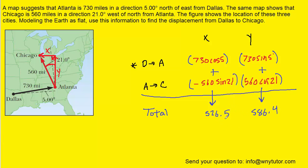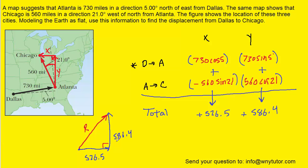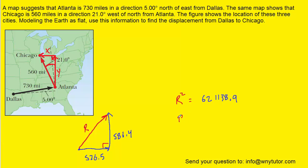Now that we have those two components, we draw a new right triangle. Both components are positive, so we project a vector in the positive X direction labeled 526.5, and a Y component straight up labeled 586.4. The resultant distance R is the hypotenuse. Using the Pythagorean theorem — R squared equals 526.5 squared plus 586.4 squared — and taking the square root of both sides, we get approximately 788.